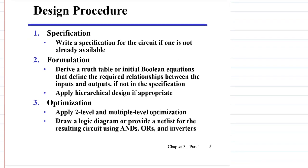Now we will see how to design a combinational logic circuit. The first step is the specification: we need to write a specification for the circuit we are going to design, if one is not already available. Sometimes the specification is already provided. The next step is the formulation, where we derive a truth table or initial boolean equations defining the relationships between inputs and outputs, referring to the specification. Sometimes the formulation is already shown in the specification.